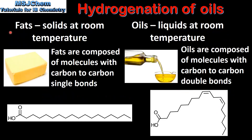We'll start by looking at the difference between fats and oils. Fats are solids at room temperature whereas oils are liquids at room temperature. Fats are composed of molecules with carbon to carbon single bonds, while oils are composed of molecules with carbon to carbon double bonds. On the left we can see the structure of a saturated fatty acid with carbon to carbon single bonds, and on the right the structure of an unsaturated fatty acid with carbon to carbon double bonds.